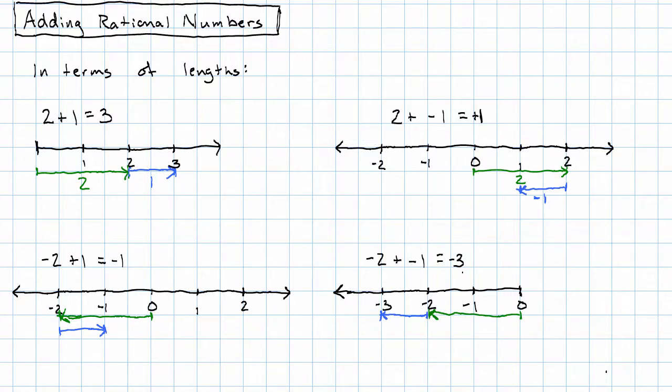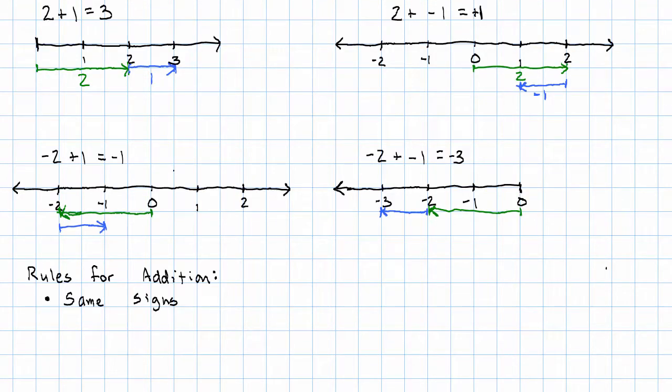Okay, looking at these pictures, I think I see a rule. If our numbers have the same sign, we're looking at a picture that's like this or like this. We're looking at a picture where both numbers point in the same direction. So the actual operation we want to do is addition. That is, we want to add the absolute values. And then we keep the sign.